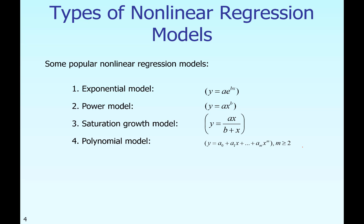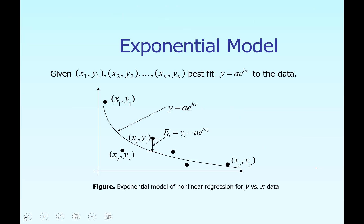Typical non-linear regression models include the exponential model, power model, saturation growth model, and polynomials of order two or more. Since we are concentrating on the exponential model, we have n data points and want to best fit them to an exponential model: y = a·e^(bx). The y data is given as a function of x, and the two constants of the regression model are a and b. This graph shows the possible regression curve along with the given data points.